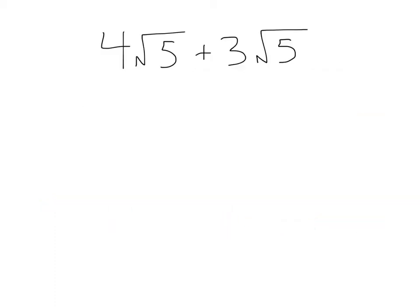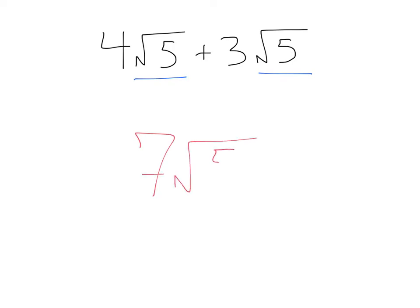So let's take a look at this example here: four root five plus three root five. This is basically saying I have four square root of fives plus three square root of fives. Since these are like terms, I'm going to end up with seven square root of five — that's just four plus three root fives.